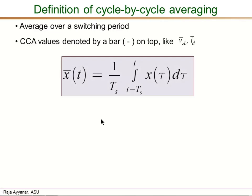Our convention is to denote the CCA values by a bar on top of the variable. For example, the pole output voltage va — its CCA value would be denoted by va with a bar on top. Similarly, the average value of the input DC current id would be denoted by id with a bar on top.